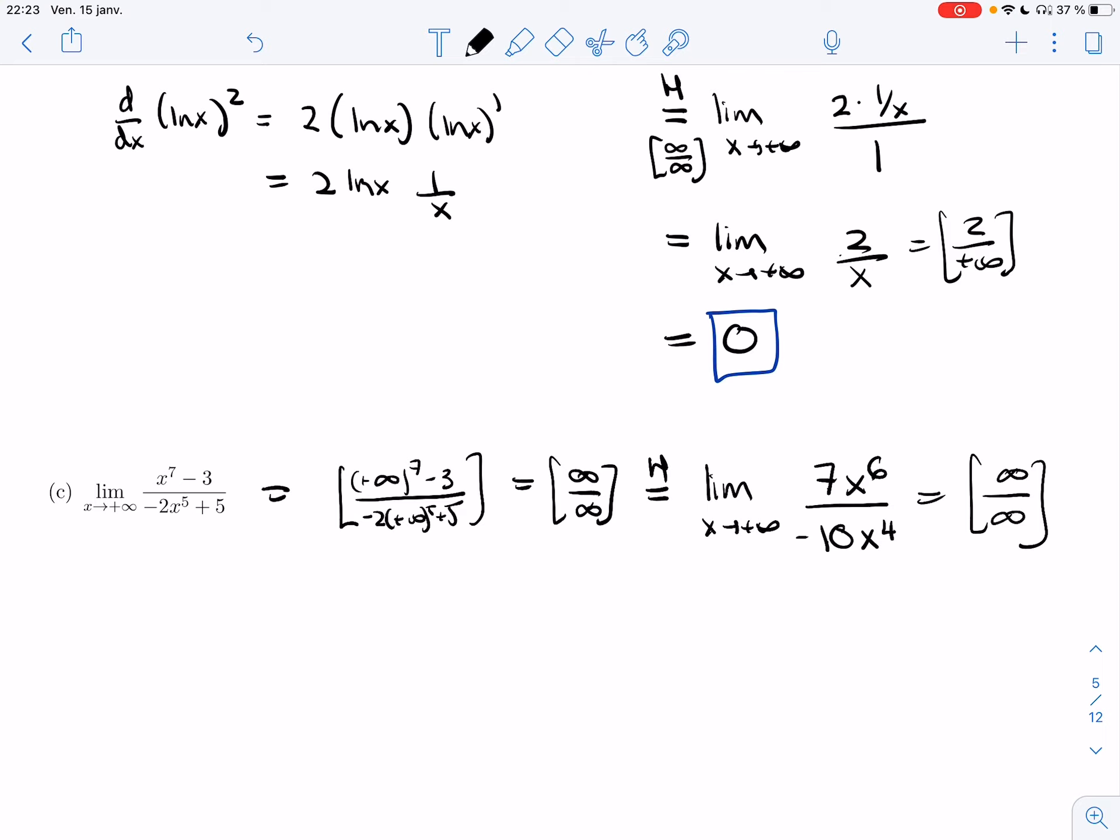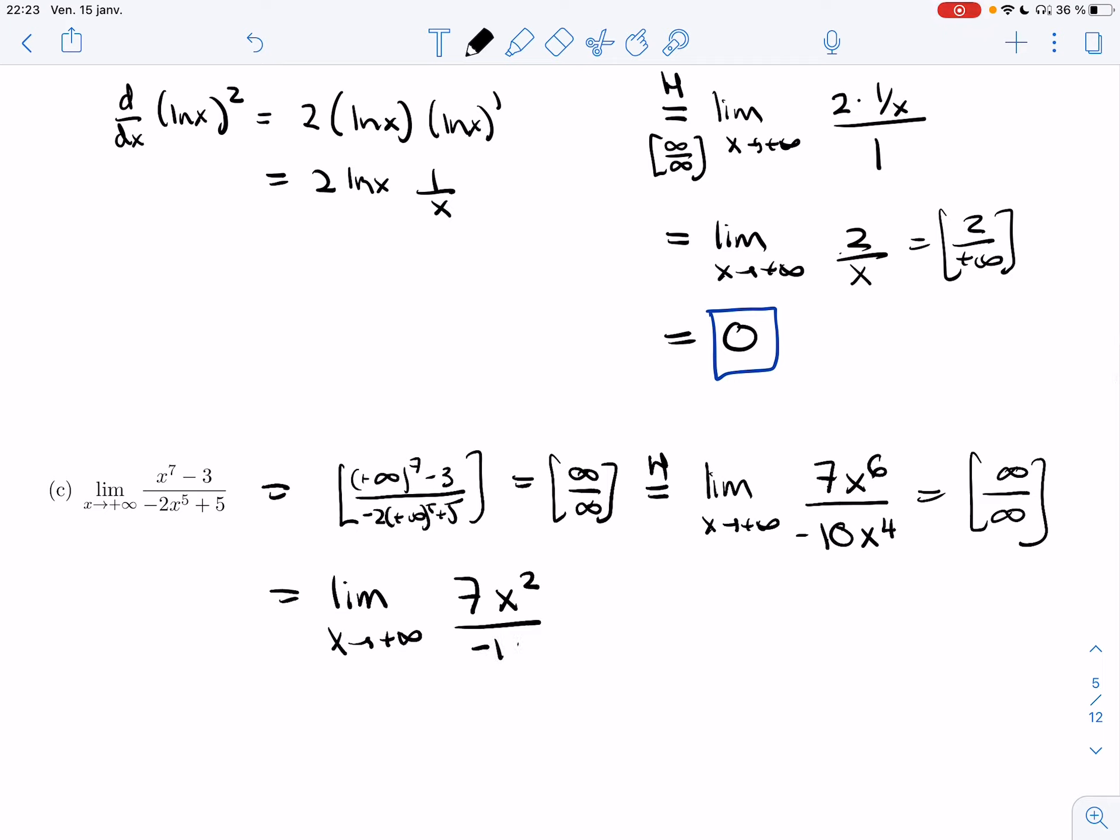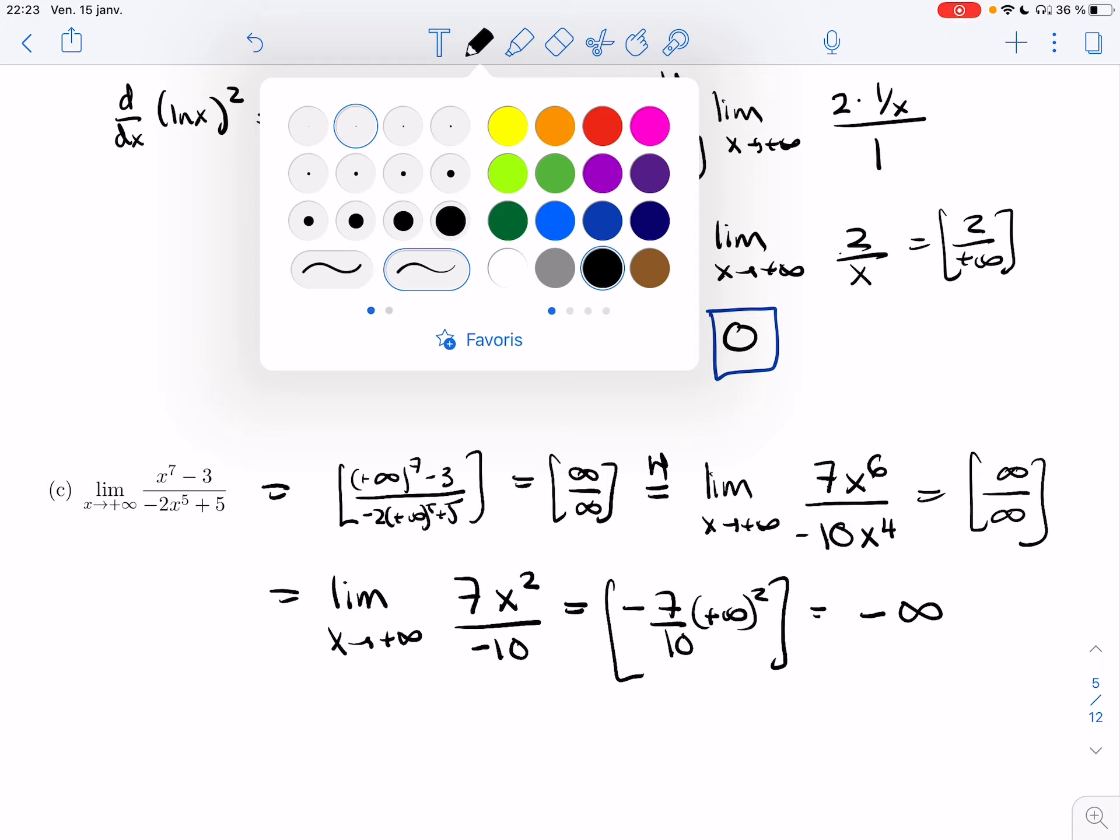You'd be allowed to reapply L'Hôpital. But if you look at it, the power keeps going down. And so it's going to cancel. It's going to get to a constant at some point. But it takes four more steps. And I don't want to do this. So at this point, I'm going to just cancel the powers. I'm going to use algebra instead of L'Hôpital. And that's going to save me some time. I'll get 7x squared over minus 10. And that's minus 7 over 10 times plus infinity squared. And if infinity squared is infinity, but times a negative number, that's going to be a big negative number. And so it's going to be minus infinity.